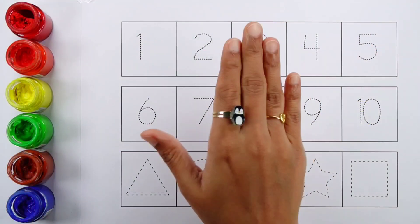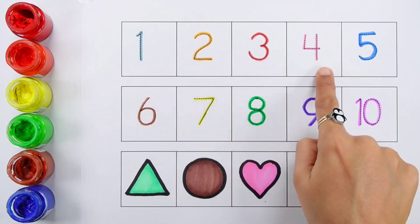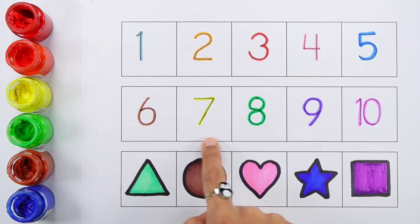Hello guys. 1, 2, 3, 4, 5, 6, 7, 8, 9, 10. Triangle, circle, heart, star, square.